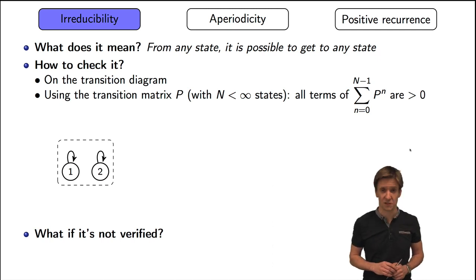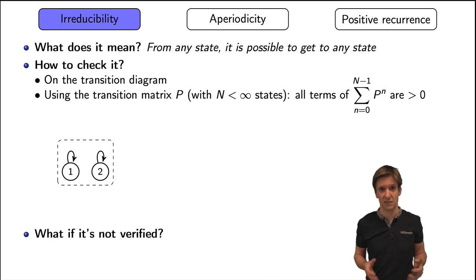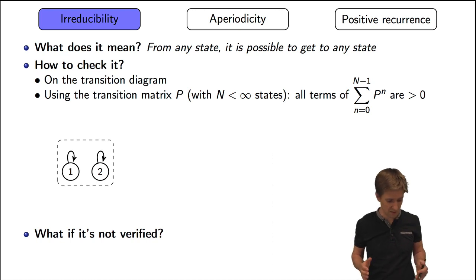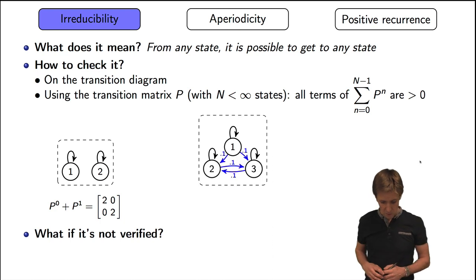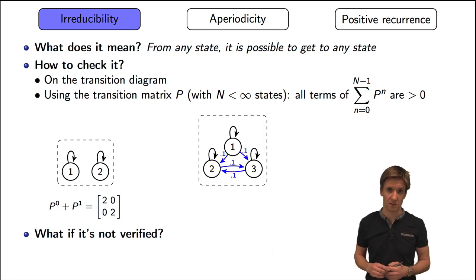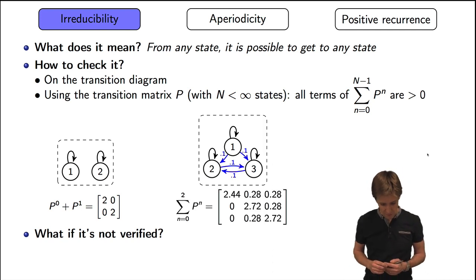What about that Markov chain with only two states? We see that when we're in state one, we're stuck there — no way we can reach state two. And same thing if we are in state two, we are stuck and will never go to state one. So this one is not irreducible. What about that three-state chain? From state one, we can reach state two and state three. But from state two or state three, we cannot go back to state one. So that one is not irreducible either. We can also check that using the transition matrix.